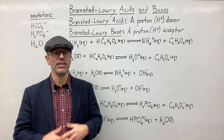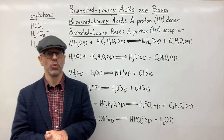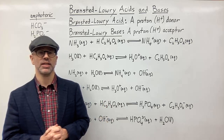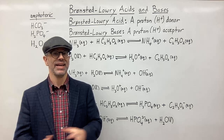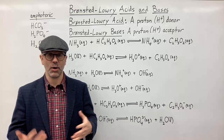We refer to H+ ions — hydrogen ions — as protons, because that's literally what they are. So a Bronsted-Lowry acid is basically anything that donates a proton or H+. And a Bronsted-Lowry base is going to be anything that accepts or takes an H+ or a proton. That is what we mean by an acid or a base according to the Bronsted-Lowry definitions.